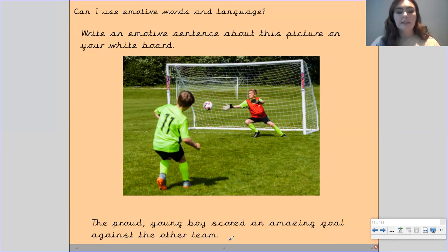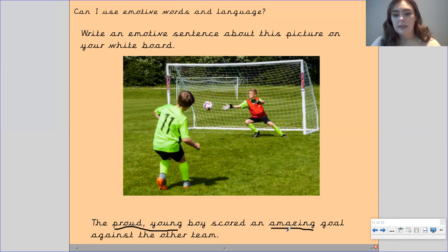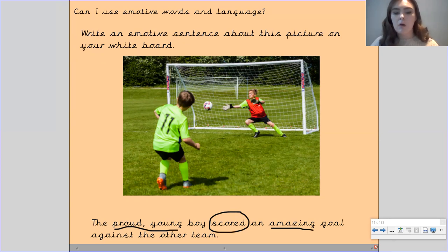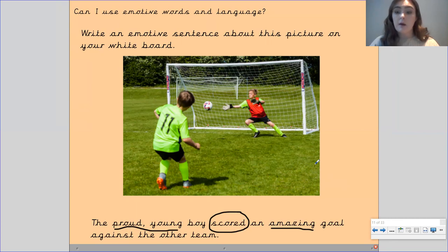Okay, so here I've got: 'The proud young boy scored an amazing goal against the other team.' The adjectives I've used are 'proud,' 'young,' and 'amazing,' and the verb I used was 'scored.' By saying this sentence, I'm feeling very happy for this young boy — I feel proud of him for scoring such a great goal. Maybe you felt something similar: happy, amazed, proud for this young boy.